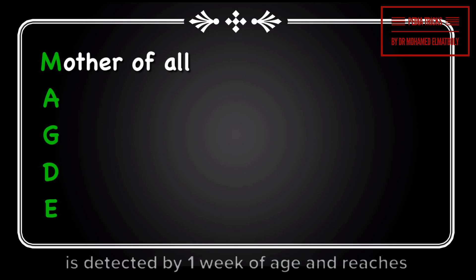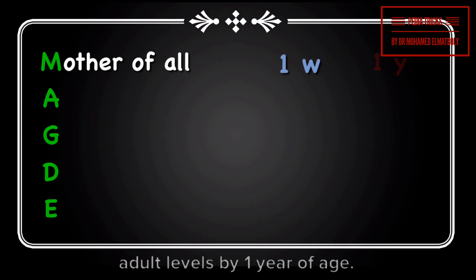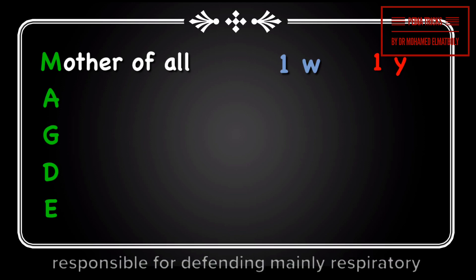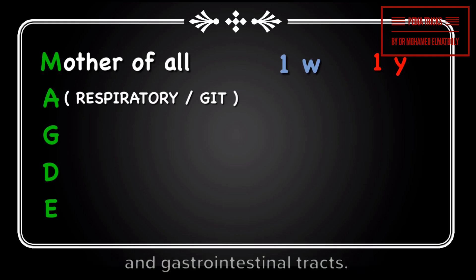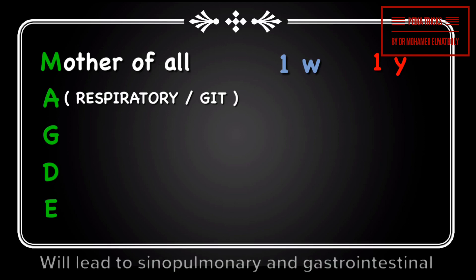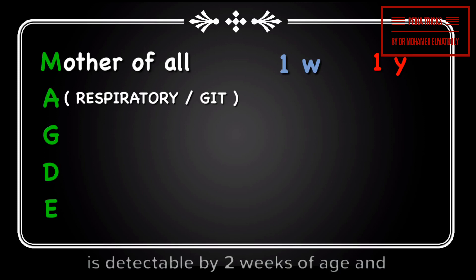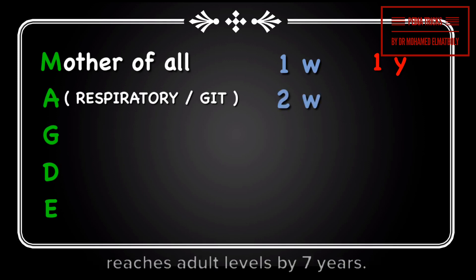Normally, serum IgM is detected by one week of age and reaches adult levels by one year of age. It is wise to remember that IgA is responsible for defending mainly the respiratory and gastrointestinal tracts. Any defect in IgA will lead to sinopulmonary and gastrointestinal infections. IgA is detectable by two weeks of age and reaches adult levels by seven years.